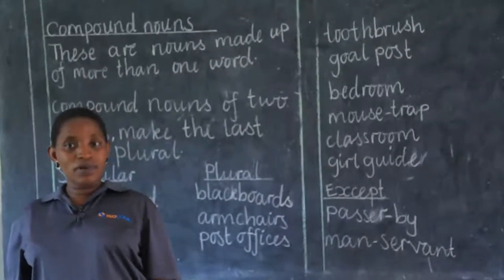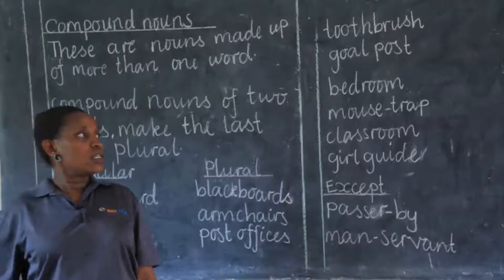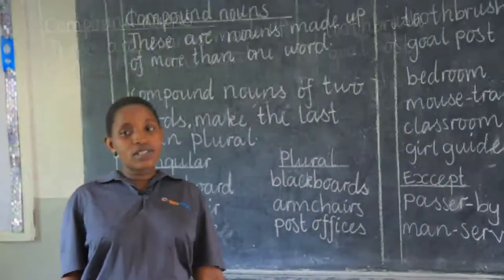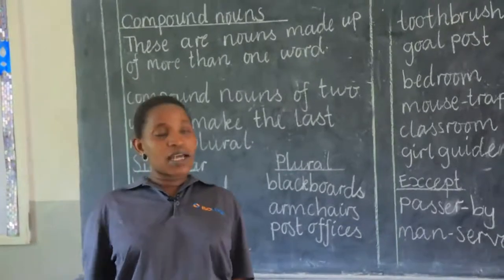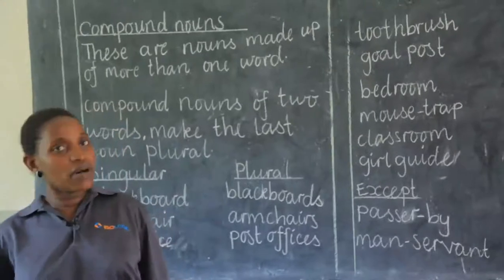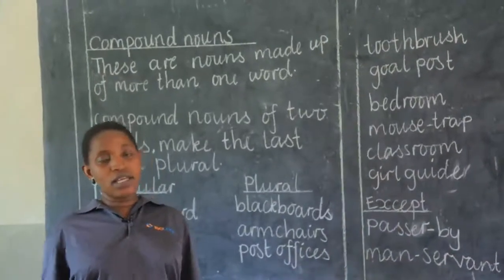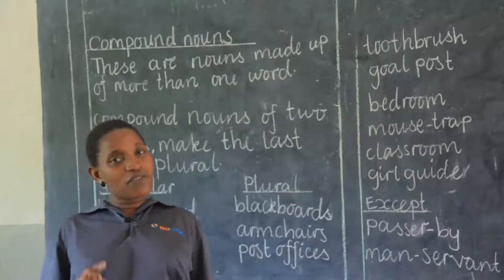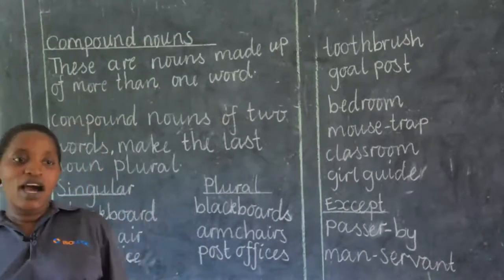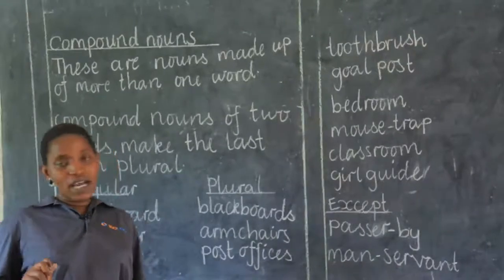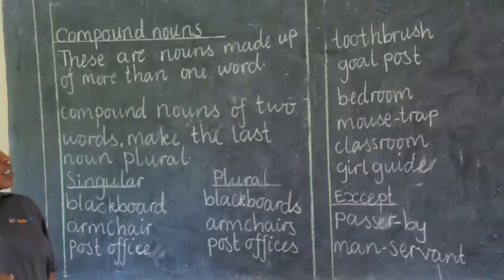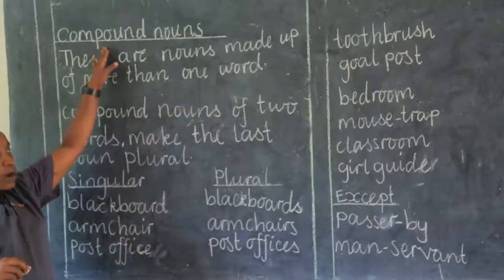We looked at examples and then we came to common nouns. We said common nouns are the names of general things, people, and places, and we looked at examples. Then we said that common nouns are made in plural and singular. We looked at very many of them. Now, still today, we are looking at compound nouns.